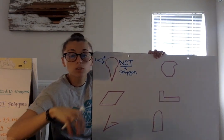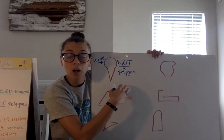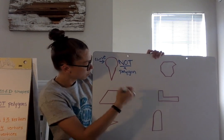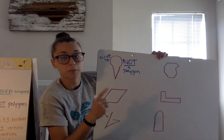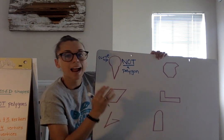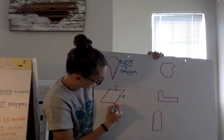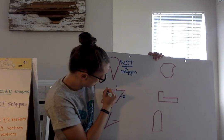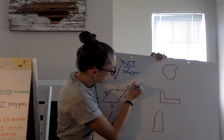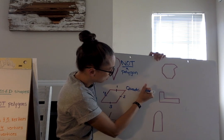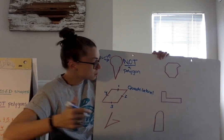Hexagons, octagons — those are names of polygons, so a shape has to be a polygon before we give it one of those names. Since this isn't a polygon, it doesn't get a name. Let's go down to this next one. All sides seem to be touching, it is closed, and I notice all sides are straight with no curves — so it is a polygon. Let's count the sides: one, two, three, four sides.